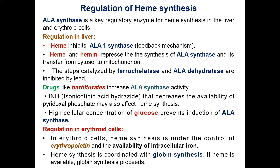In erythroid cells, heme synthesis is under the control of the hormone erythropoietin and the availability of intracellular iron. Heme synthesis is coordinated with globin synthesis — if heme is available, globin synthesis proceeds in erythroid cells.